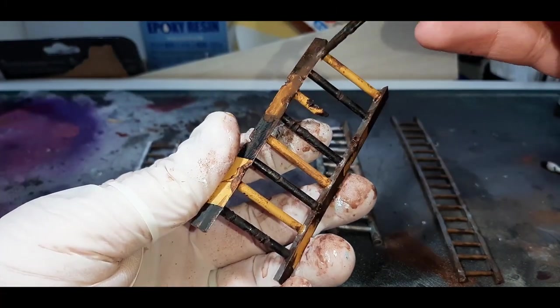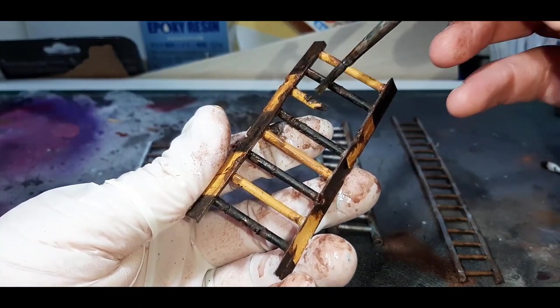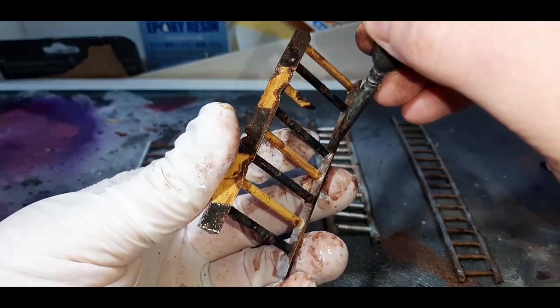With that texture applied, now I've given each ladder a coat of Oiled Earth from Vallejo. This is about a 50/50 mix of the paint and water and I went over all the ladders including the wooden areas with this wash.